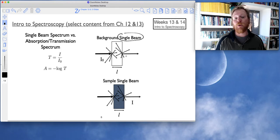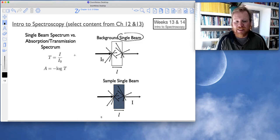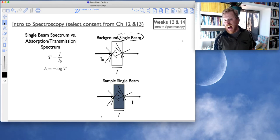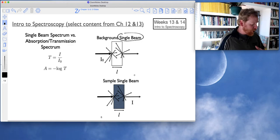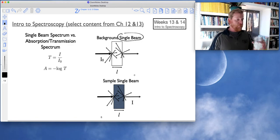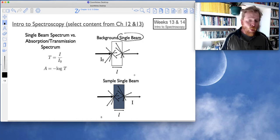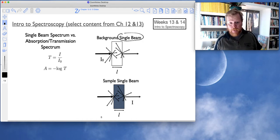So whether it's the background or the sample, we call these single beam because we're, colloquially, passing one beam at a time. Technically, we're doing a lot more than that. But these are called single beams because we're going to ratio each of these two single beam spectra to each other. And here's why.